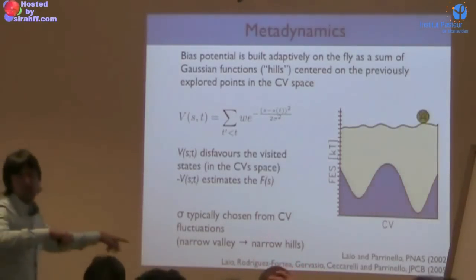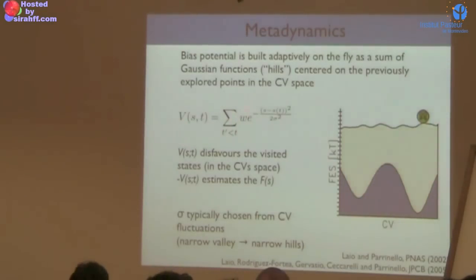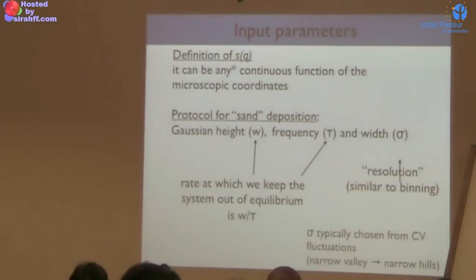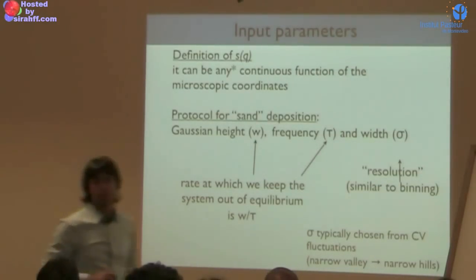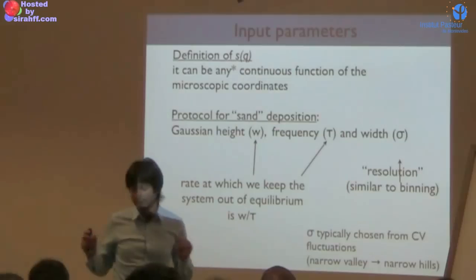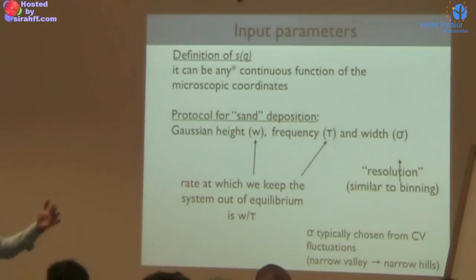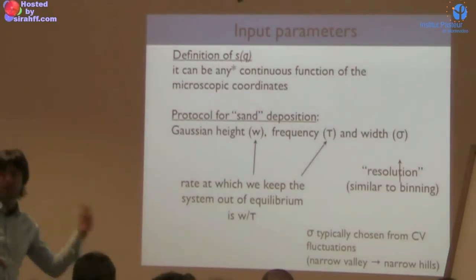At the end of this talk, we will discuss also how to choose sigma in a better way — something very recent. We know already what a collective variable is: any continuous function of the microscopic coordinates. It needs to be continuous because you have to compute forces on atoms using the chain rule: force on atom equals force on the collective variable times the derivative of the collective variable with respect to atoms. So it must be a function you can differentiate.